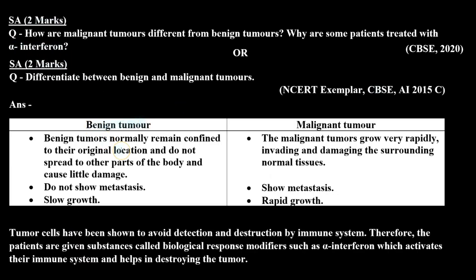The benign tumor generally remains confined to its location and does not cause much damage. The malignant tumor, on the other hand, rapidly divides and affects surrounding cells, converting them into tumor tissue. Benign tumor does not show metastasis, but malignant tumor does show metastasis. Benign tumor has slow growth and malignant tumor has rapid growth.